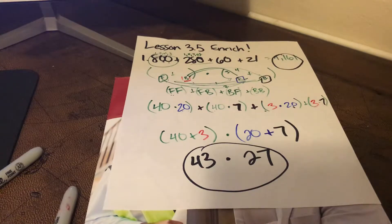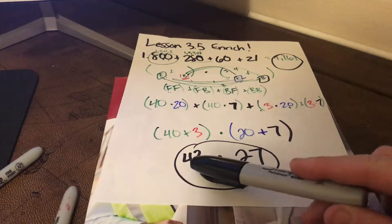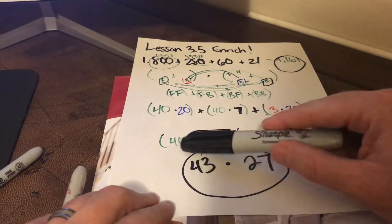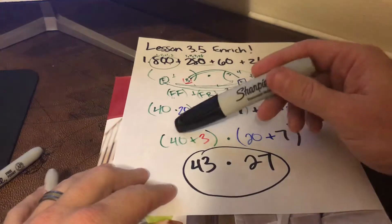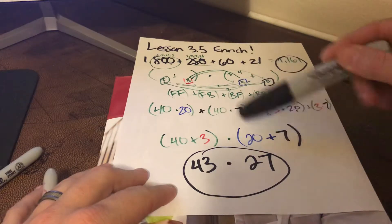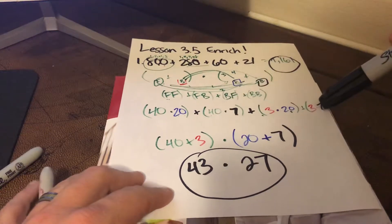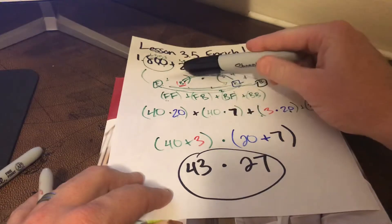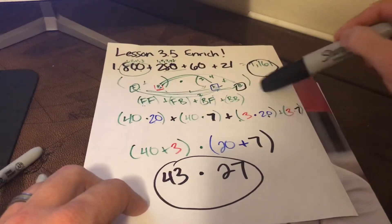That's a lot of effort, but it gets you thinking about how you can take your partial products and get all the way back to the beginning. If I just flip this on its head — 43 times 27 means 40 plus 3 times 20 plus 7 — and if I do the distributive property: 40 times 20 is 800, 40 times 7 is 280, 3 times 20 is 60, and 3 times 7 is 21. That confirms our partial products.